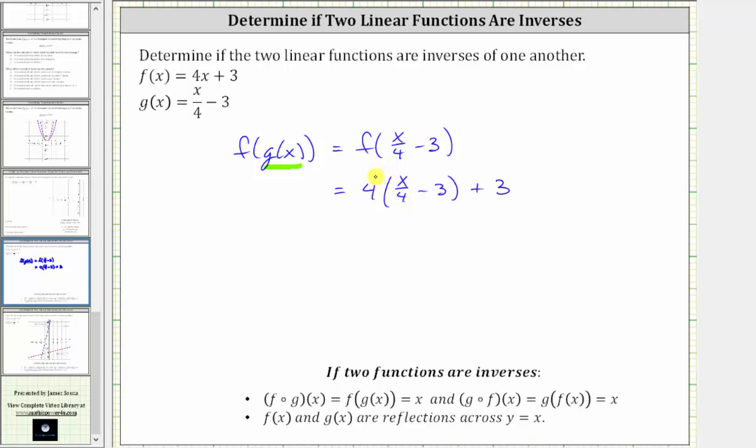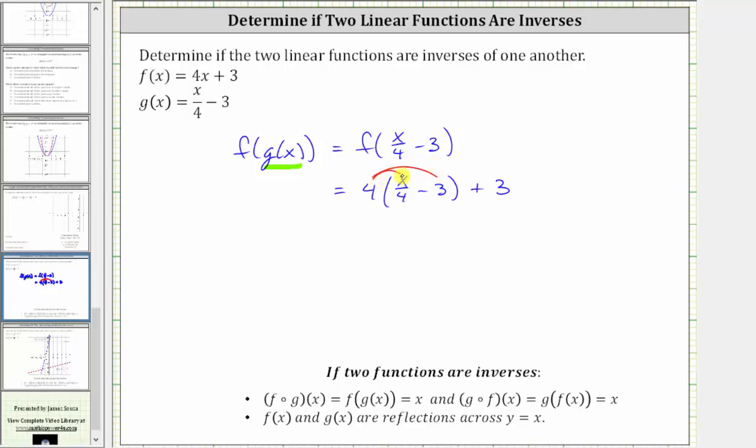So let's go ahead and distribute the four to clear the parentheses. Four times x divided by four is x. Four times negative three is negative twelve, giving us minus twelve, and then we have plus three. Negative twelve plus three is negative nine. F of g of x is x minus nine.